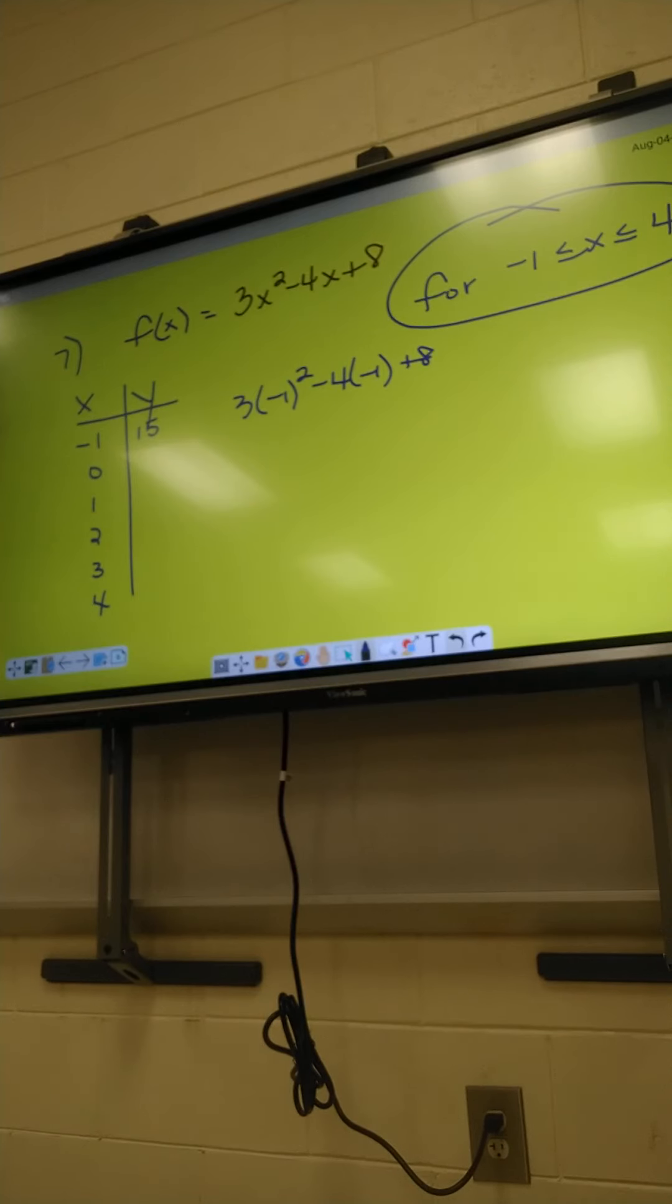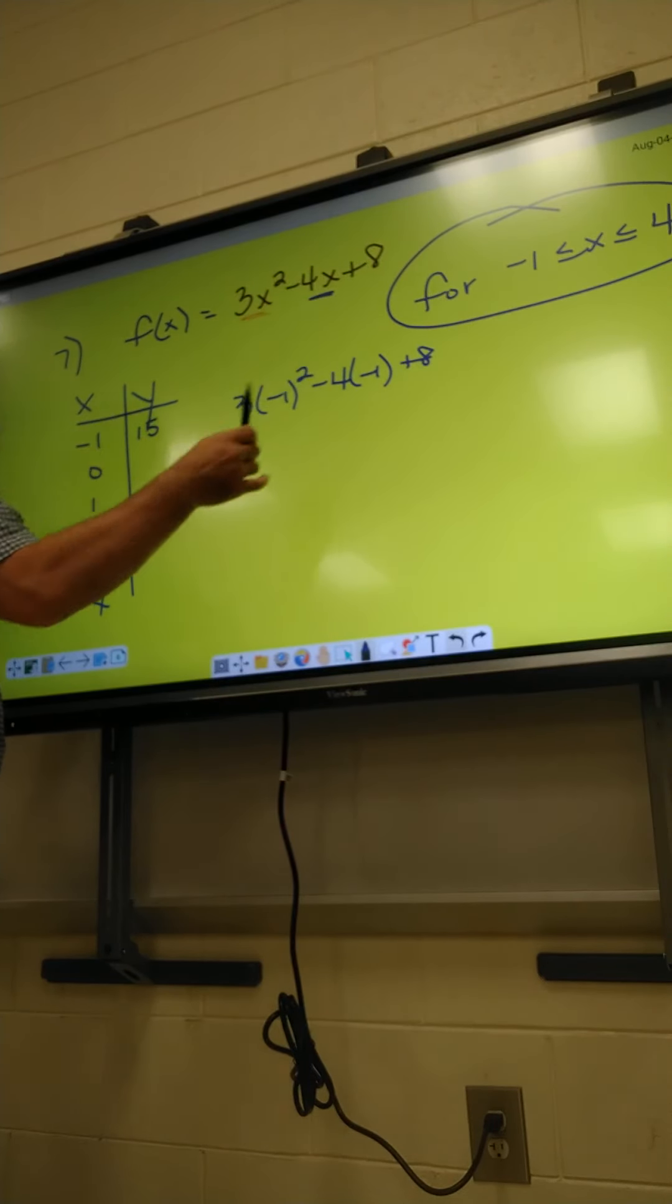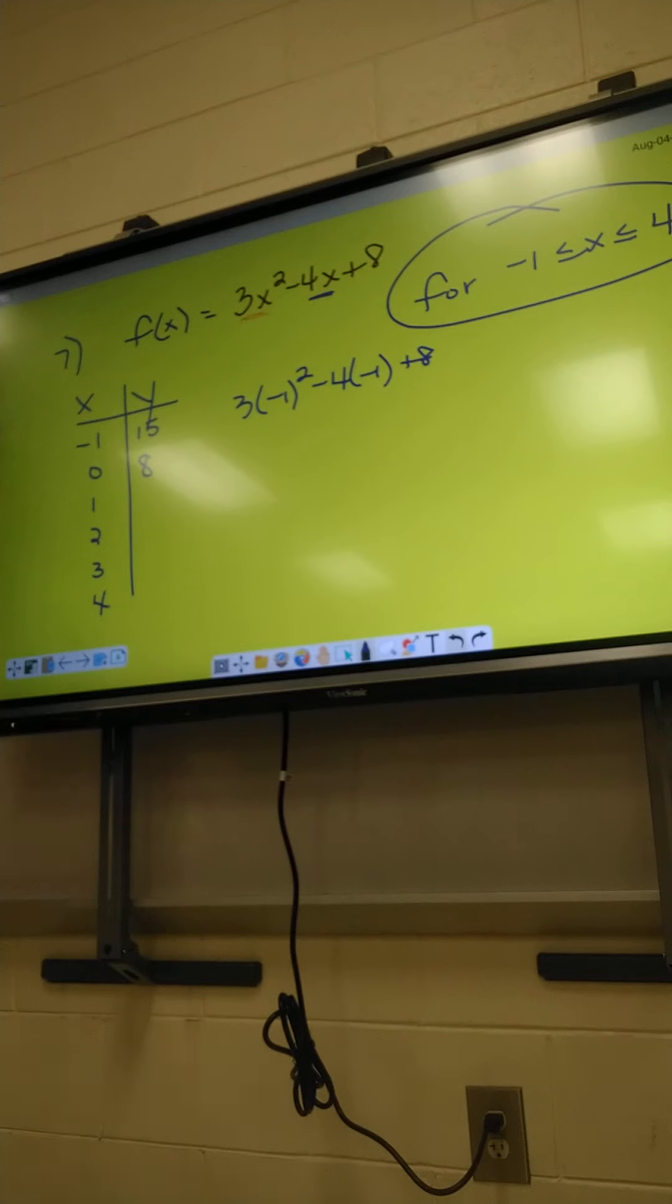Alright, plug in the next number. Let's plug in 0. 0, you can actually do that one in your head because I know if 0 goes here, that becomes 0, that becomes 0. It should just be 8. You can plug it in if you want to, but 0 is what I can do in my head. Alright, let's plug in 1 now. 3 times 1 squared minus 4 times 1 plus 8. What did I get? 7. I got 7.